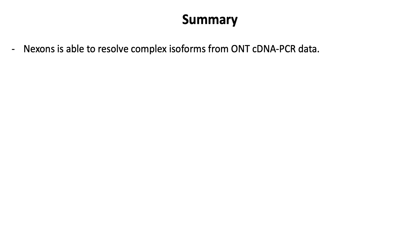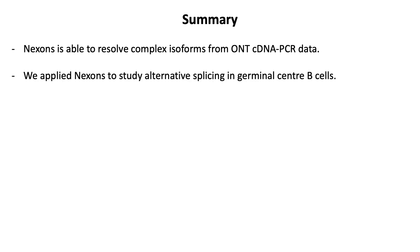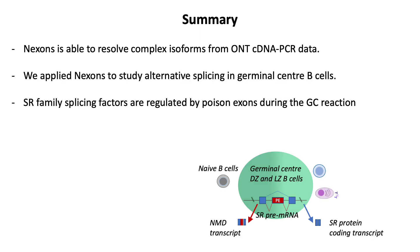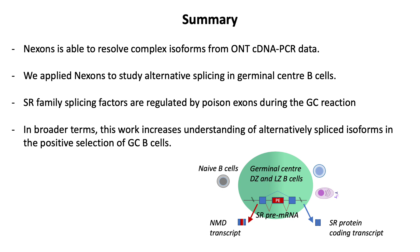In summary, I was able to show that NEXONS can resolve complex isoform structures from nanopore long-read data. We applied NEXONS to study alternative splicing changes in human germinal center B cell populations and showed that SR family members are post-transcriptionally regulated by poison exons during the germinal center reaction. Overall, we are hoping to gain a deeper understanding of alternative splicing regulation during the positive selection process in germinal center B cells.